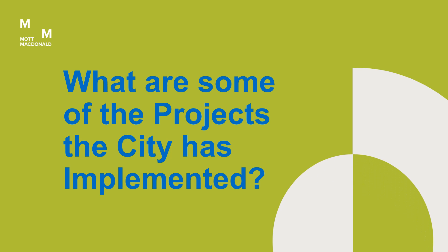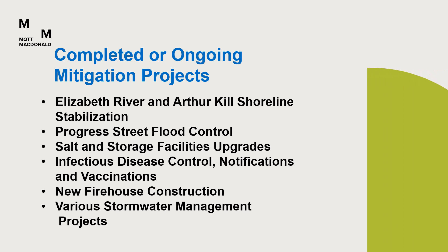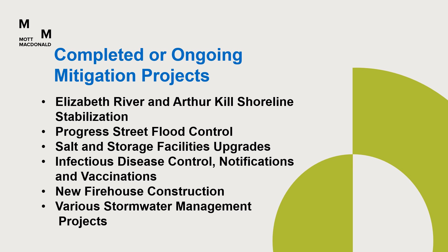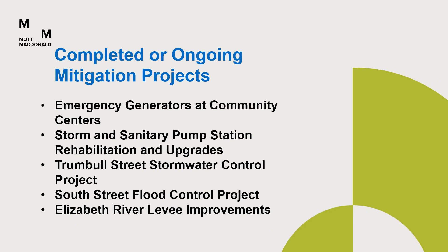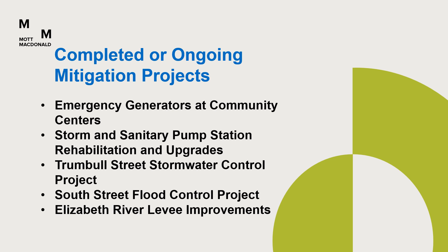What are some of the projects the city has implemented? The following are completed or ongoing mitigation projects: Elizabeth River and Arthur Kill shoreline stabilization, Progress Street flood control, salt and storage facility upgrades, infectious disease control notifications and vaccinations, new firehouse construction, and various stormwater management projects. The city has also completed emergency generators at community centers, storm and sanitary pump station rehabilitation and upgrades, the Trumbull Street stormwater control project, the South Street flood control project, and Elizabeth River levee improvements.